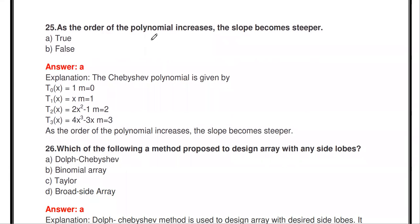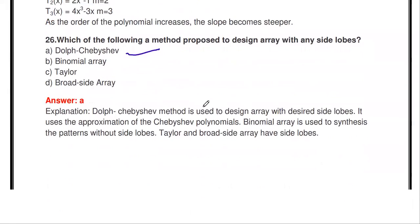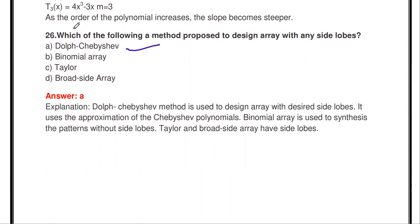As the order of the polynomial increases, the slope becomes steeper. Which method is proposed to design an array with any desired side lobe level? The Dolph-Chebyshev method is used. In the binomial array there are no side lobes, while the Taylor and broadside arrays have side lobes. Dolph-Chebyshev is used to design an array with a desired side lobe level.